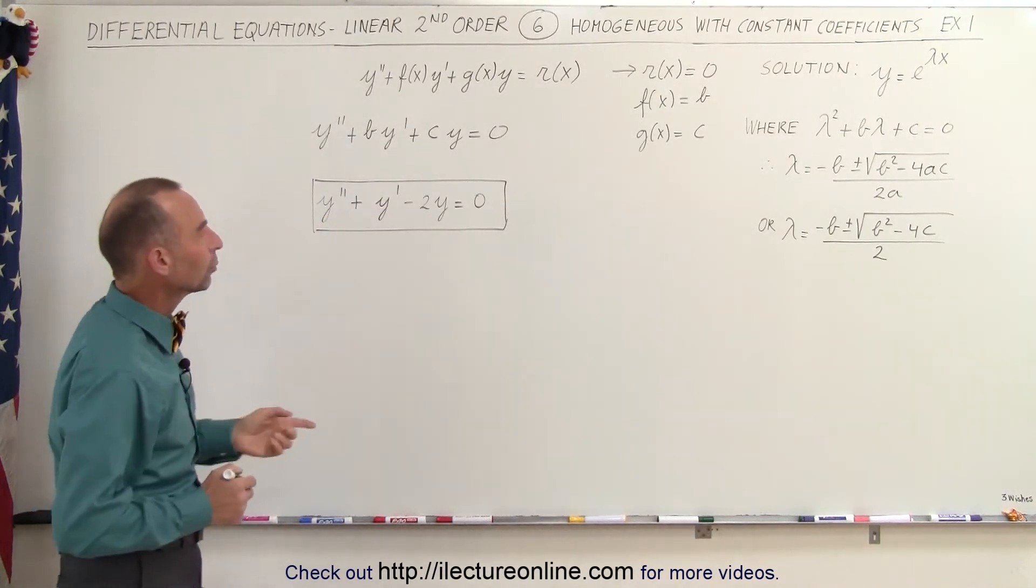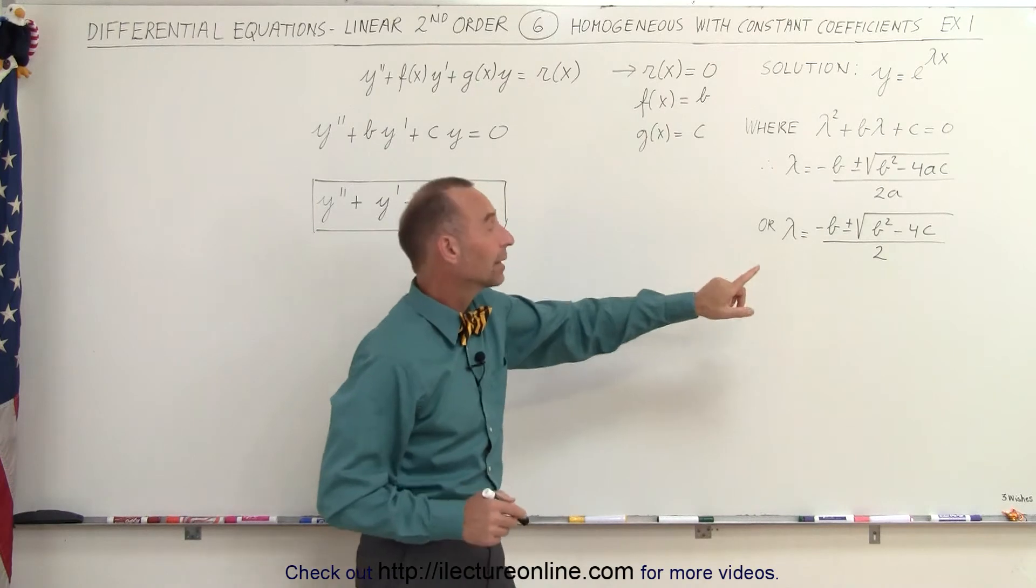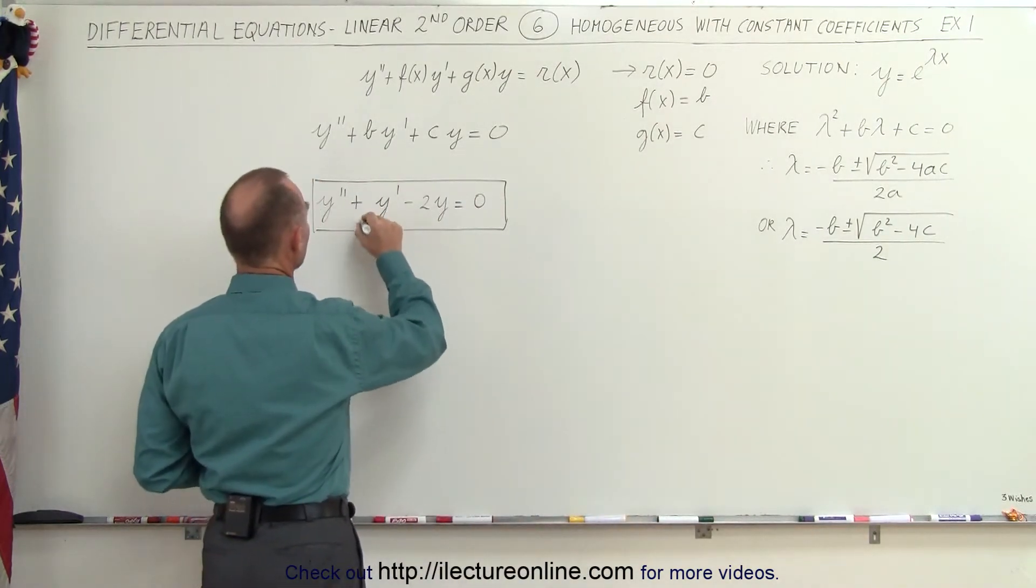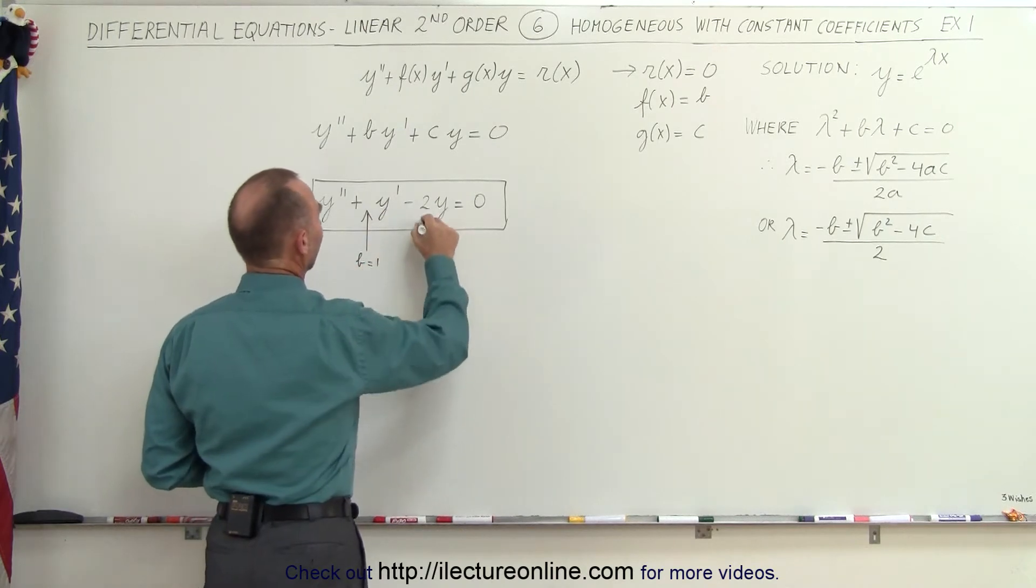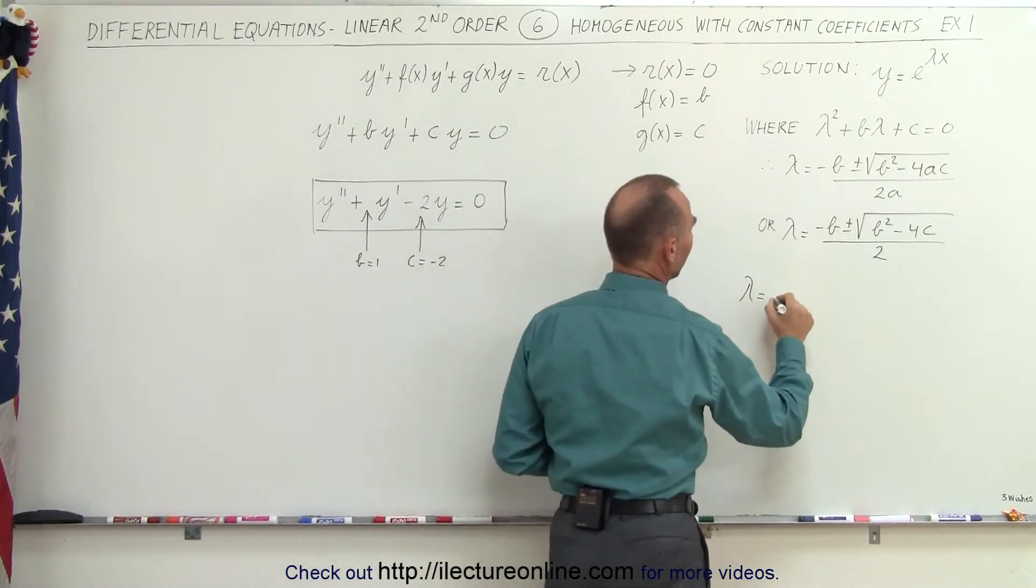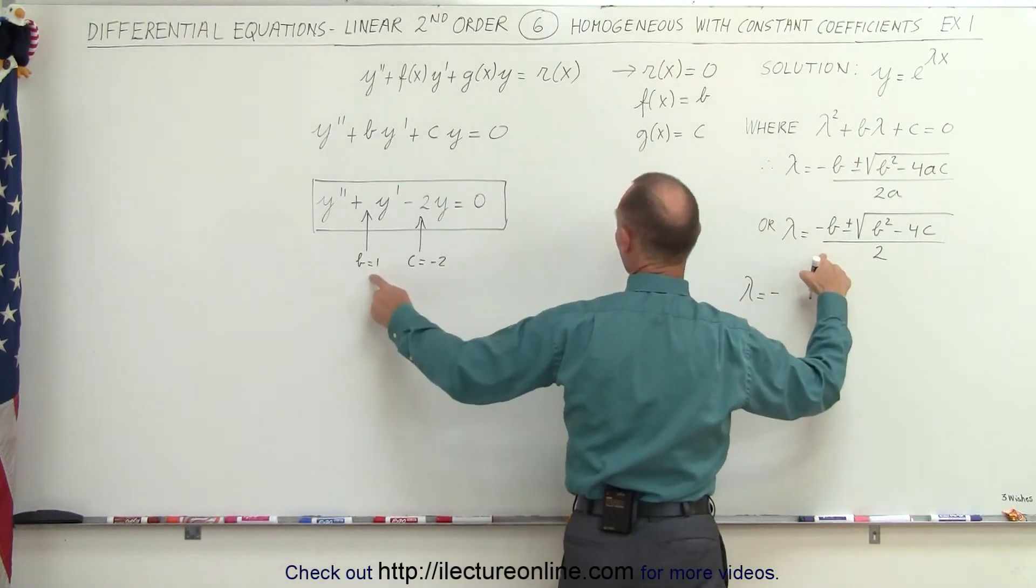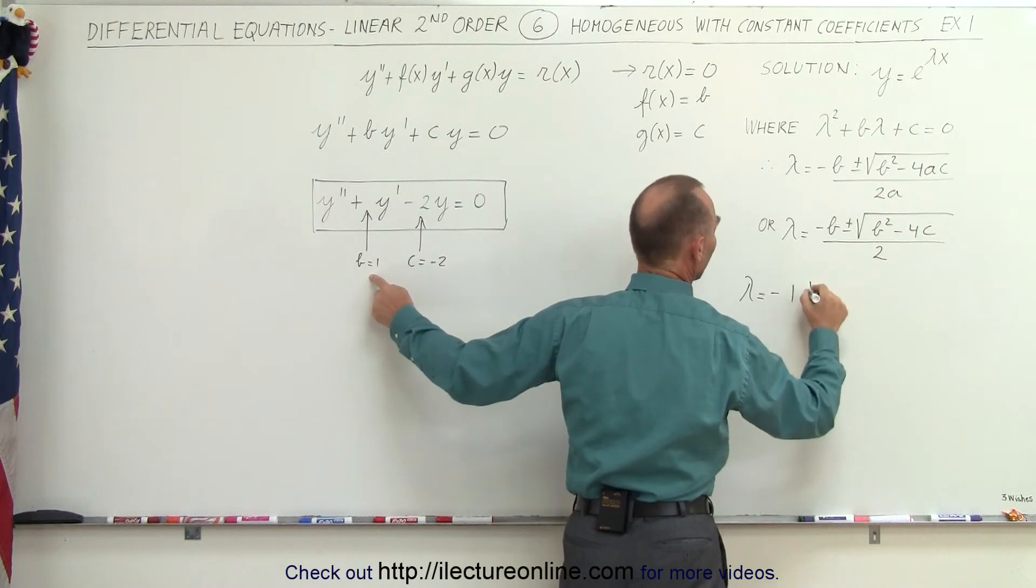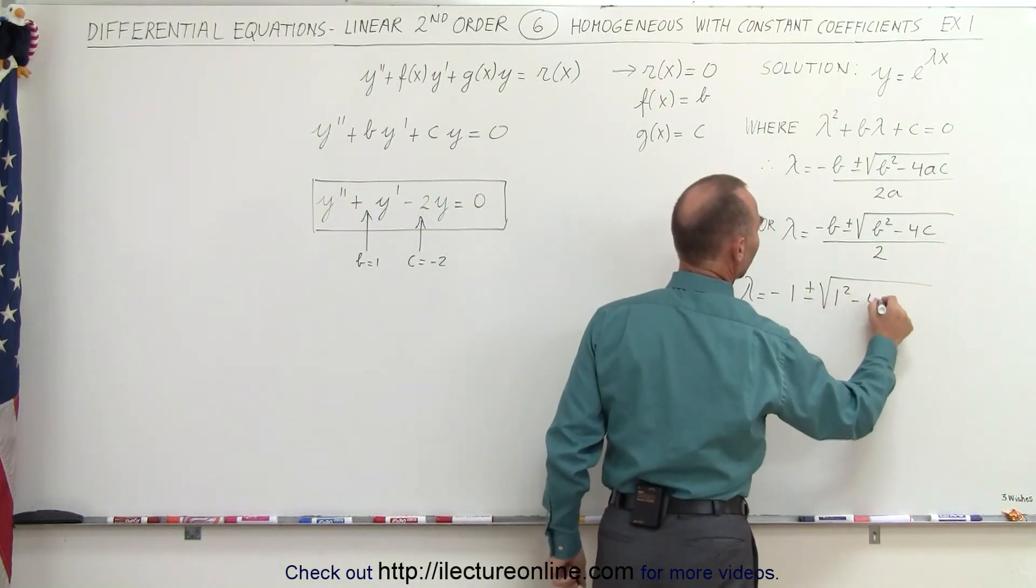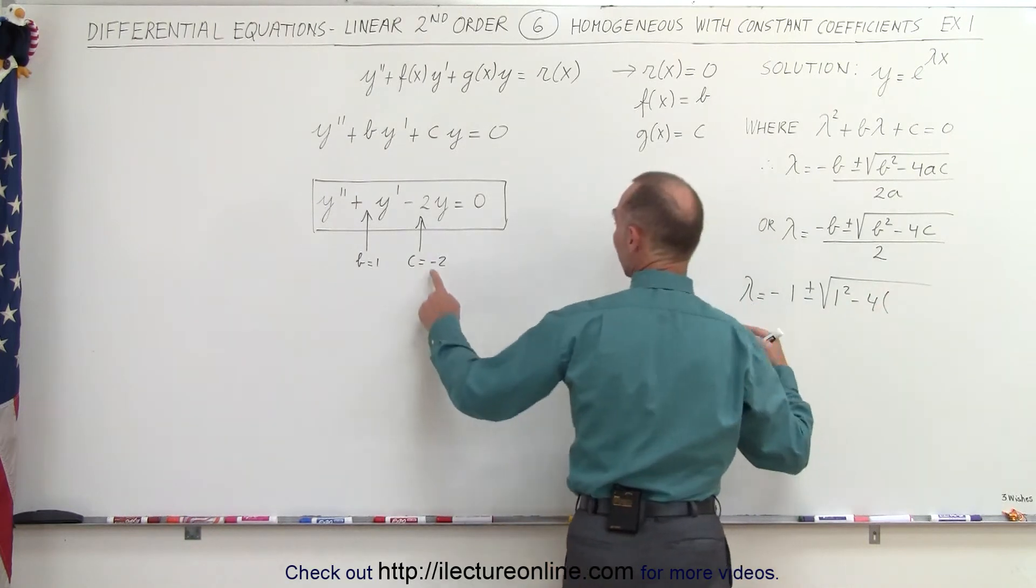Now how do we solve that? We're going to solve for lambda, recognizing what b and c equal. Here, b is equal to 1, and c is equal to negative 2. So when we plug that in, we have lambda equals minus b. Since b equals 1, we get minus 1, plus or minus the square root of b squared, which is 1 squared, minus 4 times c. Remember c is negative 2.